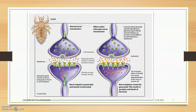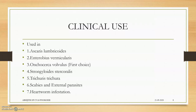Looking at the mechanism diagram: glutamate-gated chloride channels open, allowing more chloride ions in, leading to hyperpolarization of the nerve or muscle cell. This prevents propagation of the nerve impulse, leading to paralysis. Clinical uses include Ascaris lumbricoides, Enterobius vermicularis, Onchocerca volvulus (Mazzotti reaction — first choice), Strongyloides stercoralis, Trichuris, scabies, external parasites, and heartworm infestation.